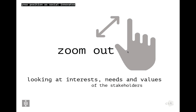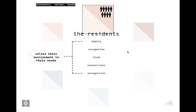Let's zoom out and figure out what these stakeholders really care about. We look at their interests — what informs their position; their needs — what sustains them and keeps them going; and their values — their 'why,' their core value that brought them into existence. Looking at these three elements clarifies what each stakeholder actually cares about and broadens their perspective and the available options.